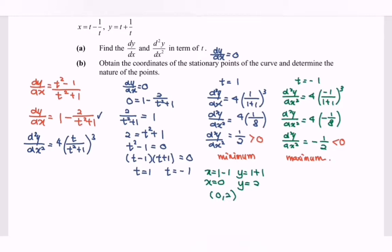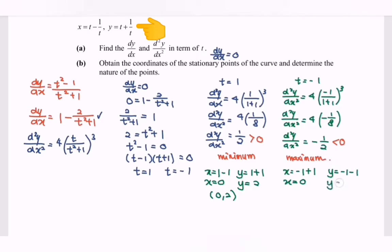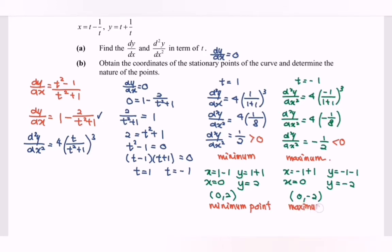For t equals negative 1: x equals negative 1 plus 1 equals 0, and y equals negative 1 minus 1 equals negative 2, giving the coordinate 0, negative 2. Since the second derivative is less than 0 at t equals negative 1, this is a maximum. Therefore, the point 0, 2 is a minimum point and 0, negative 2 is a maximum point. Thanks for watching.